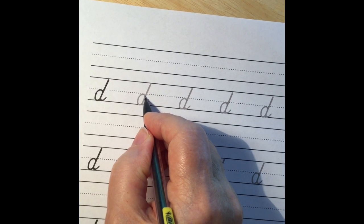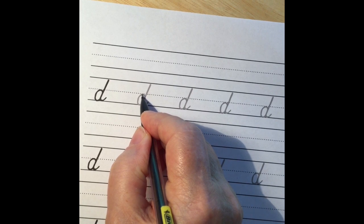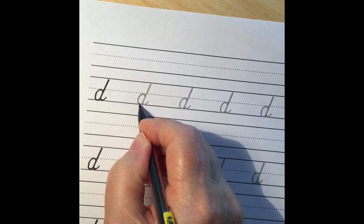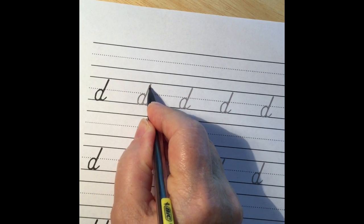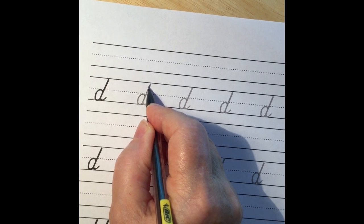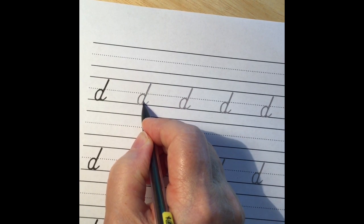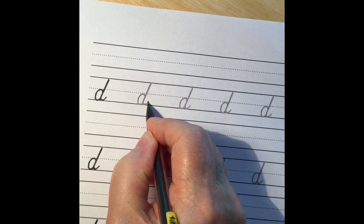So we start here just below the midline. We make our under curve. I'm sorry, that was a down curve. We make our under curve up and slant down and slant down and make an under curve.